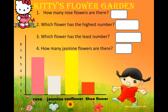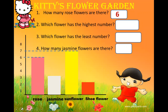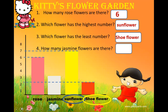Here, the flowers — rose, jasmine, sunflower, shoe flower — are on the x-axis, and the numbers 1, 2, 3 up to 8 are on the y-axis. How many rose flowers are there? It's 6. The second question: which flower has the highest number? Looking at the block graph, which is the highest column? It is 7 — that is sunflower. So sunflower has the highest number. Third question: which flower has the least number? It is number 2, that means shoe flower has the least number. Last question: how many jasmine flowers are there? It's 3.